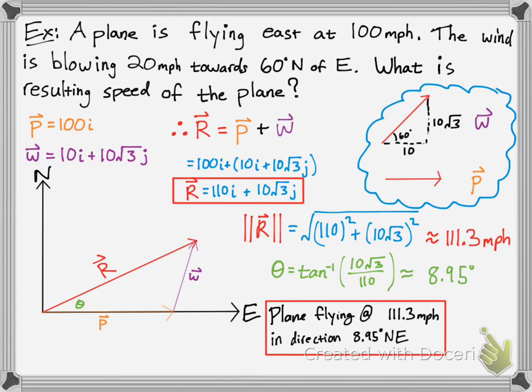Therefore, you can conclude that the plane is flying 111.3 miles per hour in the direction 8.95 degrees north of east. Again, this is the 110i, and this is the 10 radical 3 portion.